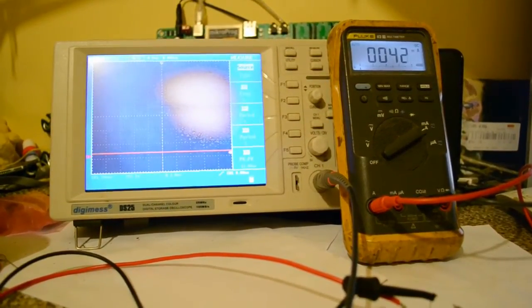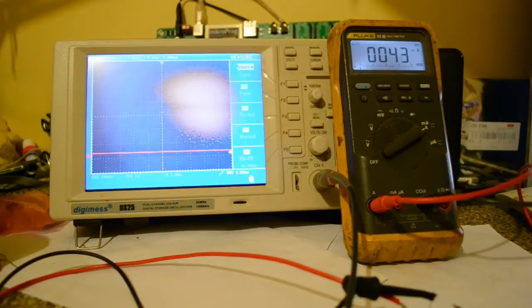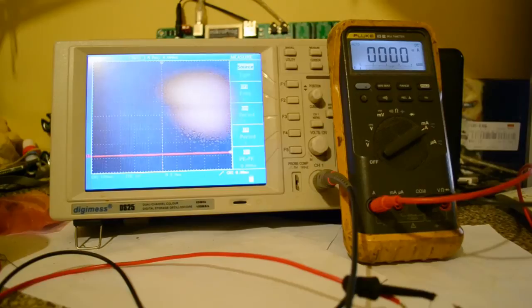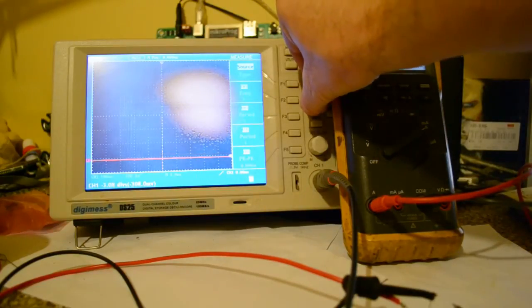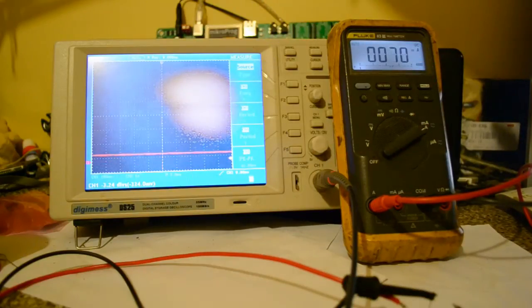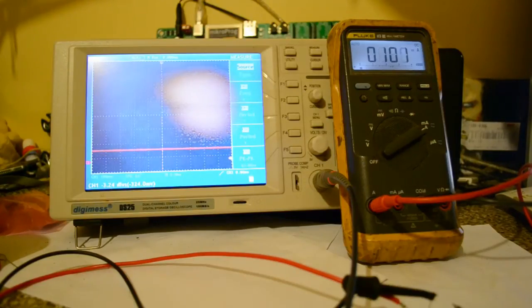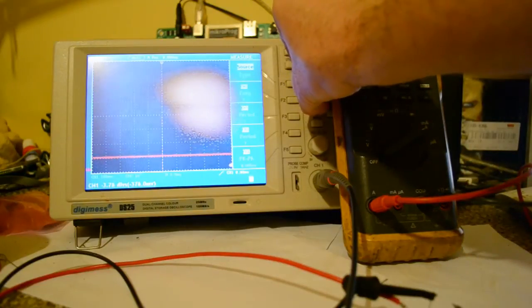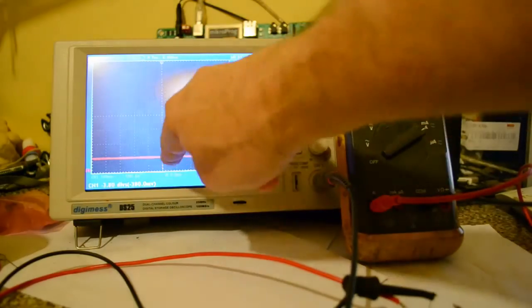Right, so you can see the current there, 40 milliamps. So if I drop it back down to nothing, 100 millivolts per division, let's set that up. 100 milliamps.